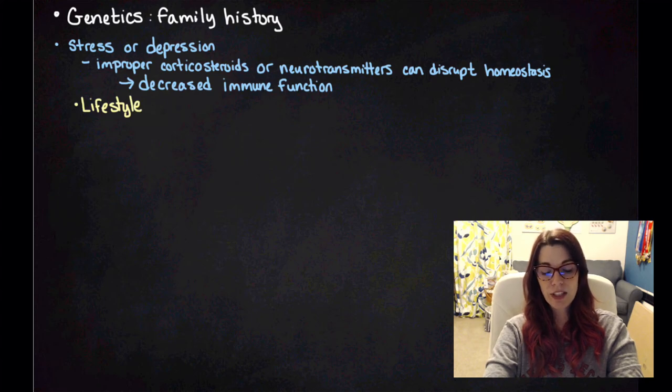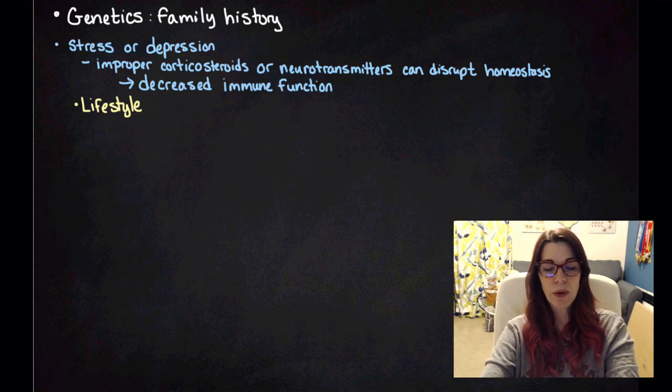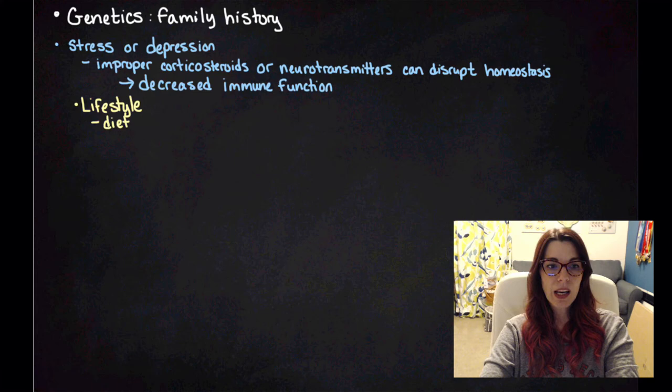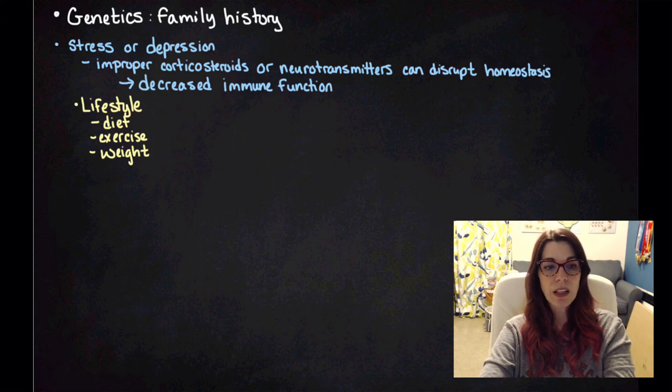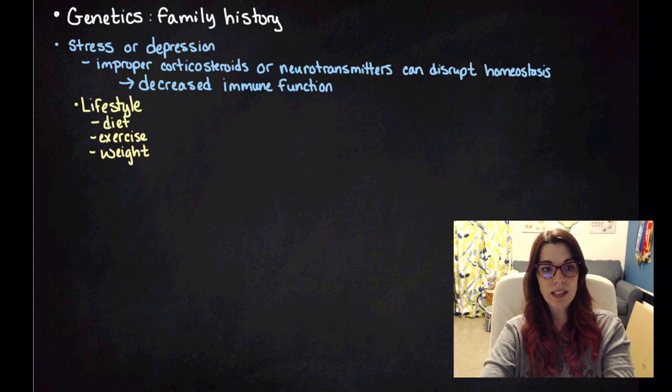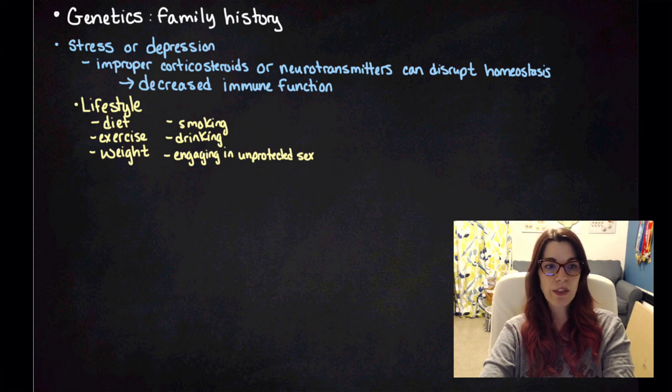The next risk factor is lifestyle. We've talked a little about this in class. We're going to talk about some really specific aspects of lifestyle that can increase your probability of contracting a disease. The first is diet and exercise, and together those have to do with your weight. Being extremely overweight or extremely underweight can increase your probability of certain diseases. Smoking, drinking, engaging in unprotected sex—those are all examples of how lifestyle can put you more at risk for certain diseases.